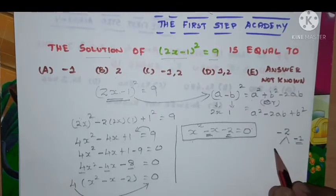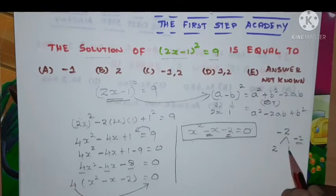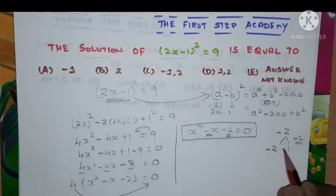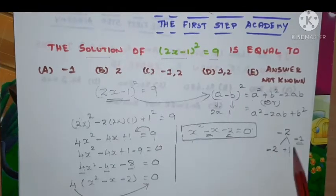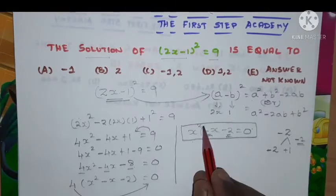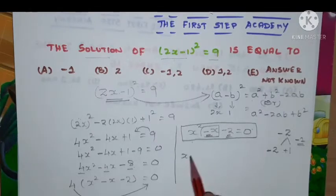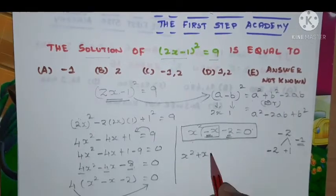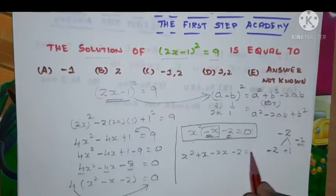At the same time when I add those two numbers, that should provide the value of minus 1. That is 2 and 1, where minus 2 and plus 1. I'm going to write minus 2 into plus 1 is minus 2 or minus 2 plus 1 is minus 1. So we can split this minus x as x² + x - 2x - 2 = 0.